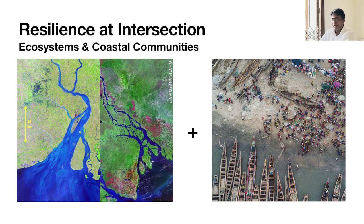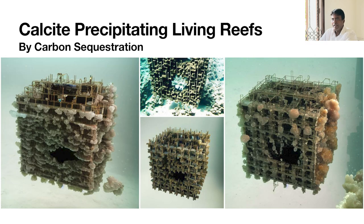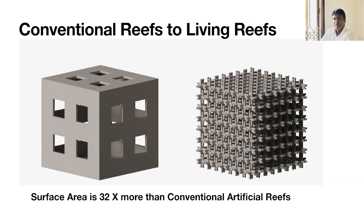With that in mind, resilience can be achieved at the intersection of ecosystem and community. This interlocking system can become part of a marine biodiversity facility. We also looked at how calcite precipitation can facilitate carbon sequestration in line with addressing climate change. Drawing a comparison with conventional reefs, because of this interlocking and three-dimensional geometry, we are able to achieve 32 times more surface area compared to a normal system, giving more opportunity for the biological cycle to establish.